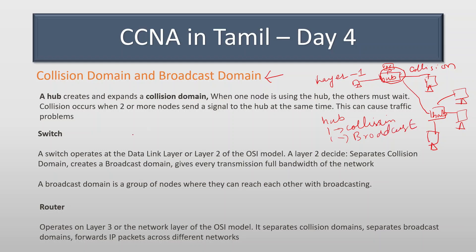Next, we will look at the switch. We already discussed it. The switch operates at OSI layer 2. The OSI model has 7 layers. In hardware, the switch has the capability to process at layer 2.